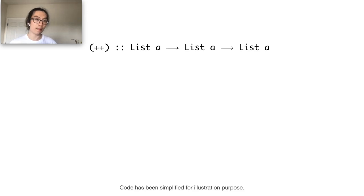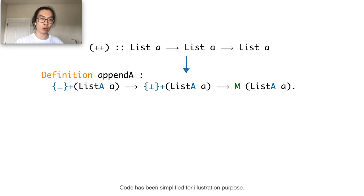Let's again use the append function as an example. First, we translate the append function to a function that has the following type. The first difference is that we augment all the input types of the function with a possibly undefined value.